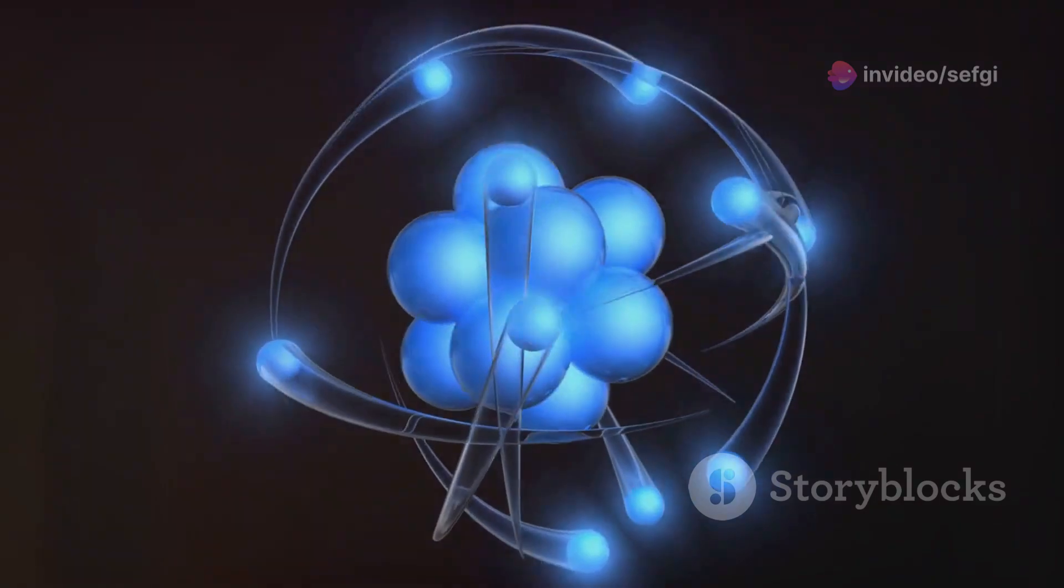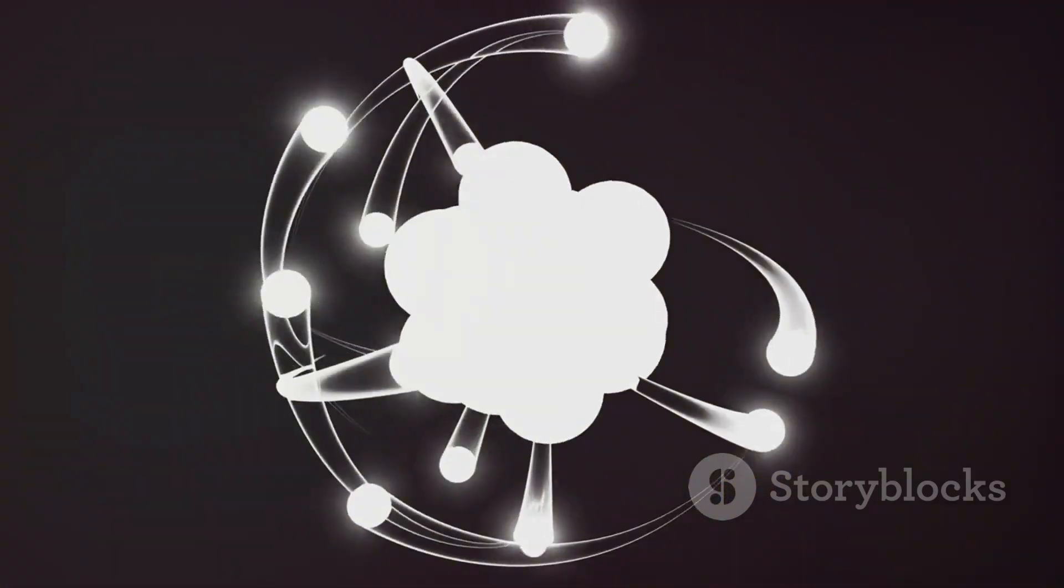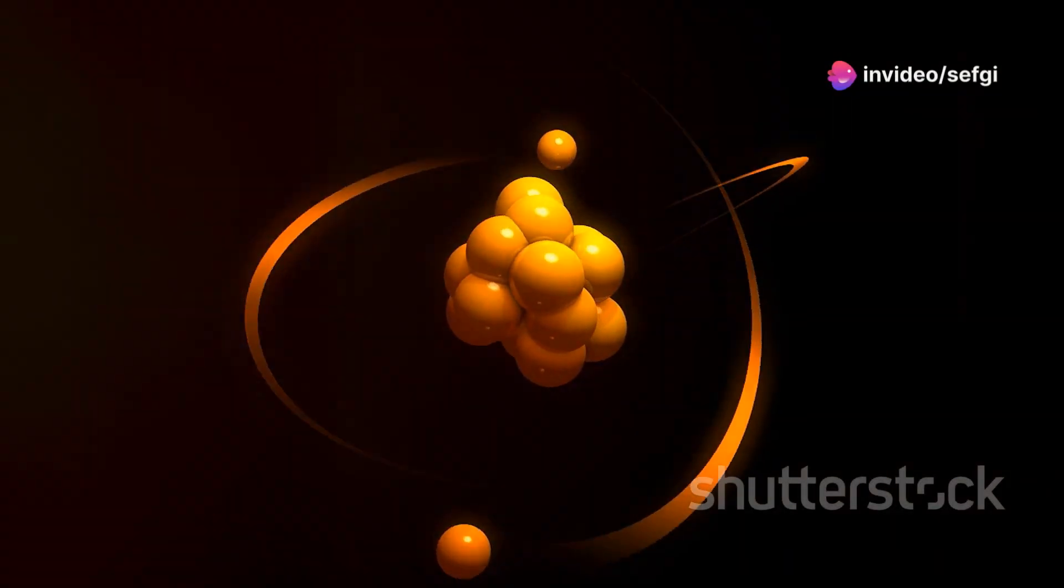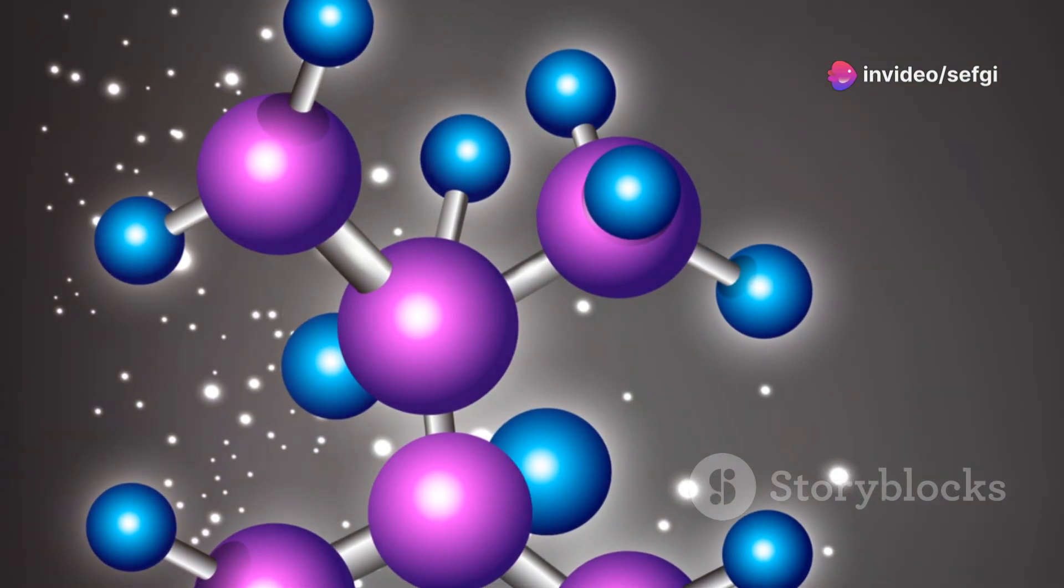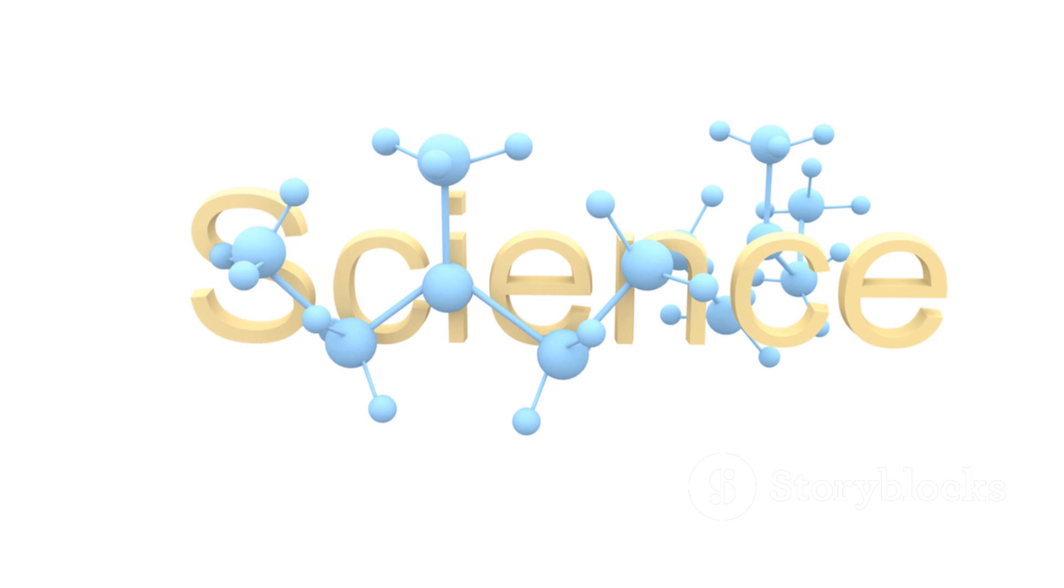Electrons, much smaller than protons and neutrons, orbit the nucleus at incredibly high speeds. These electrons are held in place by the electromagnetic force, creating a dynamic and complex structure.